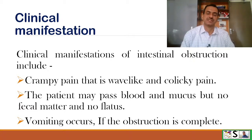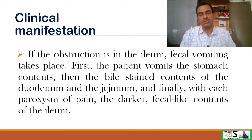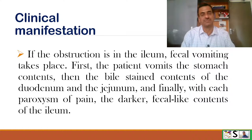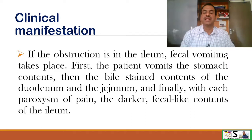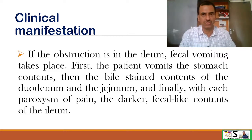Vomiting occurs. In case the obstruction is complete, the client vomits. If the obstruction is in the ileum, fecal vomiting takes place — fecal matter comes out as vomitus. First the patient vomits the stomach contents, then bile-stained contents from the duodenum or jejunum, and finally, with each paroxysm of pain, the darker fecal-like contents from the ileum come out as vomiting.